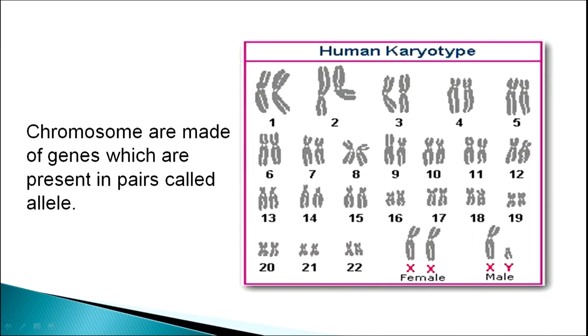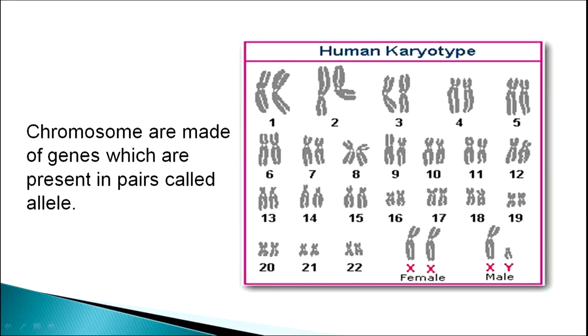The chromosome consists of genes. These genes are present in pairs called alleles. Chromosomes are made up of genes, and these genes are present in pairs called alleles. Why in pairs? Because each gene is present in chromosomes and chromosomes have two arms, so all the genes are present in pairs.